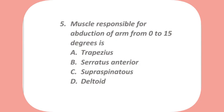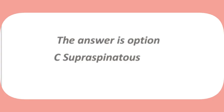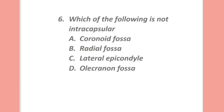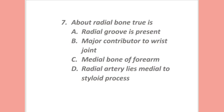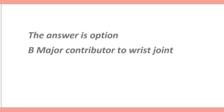The muscle responsible for abduction of the arm from 0 to 15 degrees is: trapezius, serratus anterior, supraspinatus, or deltoid? The answer is option C — supraspinatus. Which of the following is not intracapsular: coronoid fossa, radial fossa, lateral epicondyle, or olecranon fossa? The answer is option C — lateral epicondyle. Regarding the radial bone, which is true: radial groove is present, major contributor to wrist joint, medial bone of forearm, or radial artery lies medial to styloid process?